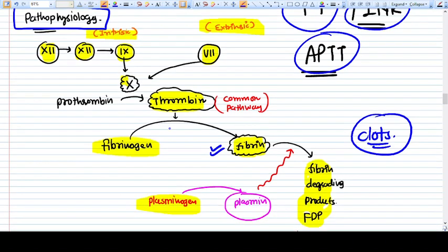First of all, the goal of the coagulation pathway is to make fibrin. Fibrin will incorporate the platelets inside it, making a mesh, and the clot will be formed. We need to make the clot because we need hemostasis.